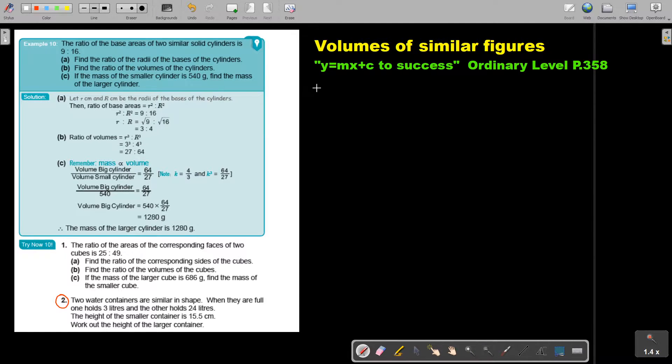Number 2. Two water containers are similar in shape. When they are full, they hold 3 liters and the other one holds 24 liters. The height of the smaller container is 15.5. Work out the height of the larger container.